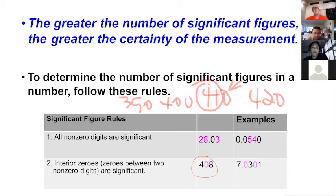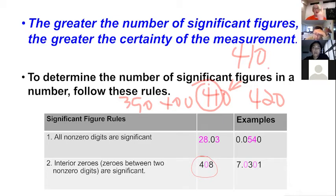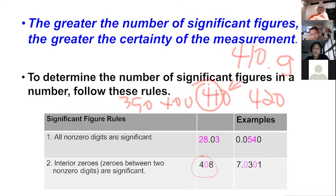If you wanted to make that trailing zero significant, you'd add a decimal point after it: write '410.' That says you measured to the nearest one, not the nearest ten — so the next number would be 411. If a recipe said to add 410. grams of flour, you'd better add exactly 410, not approximately 410. The decimal makes the difference in precision clear.